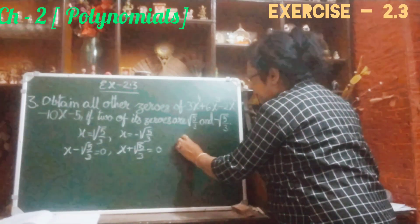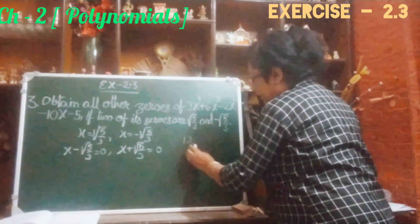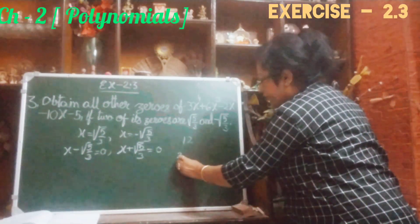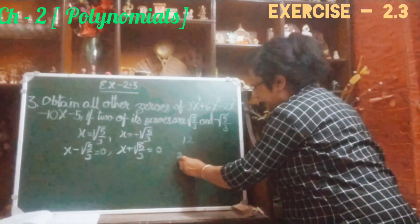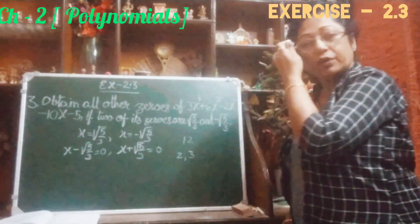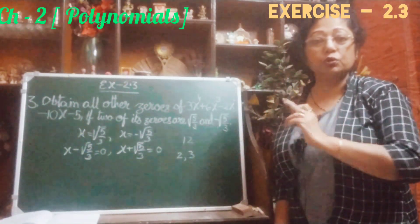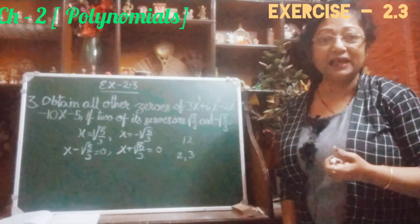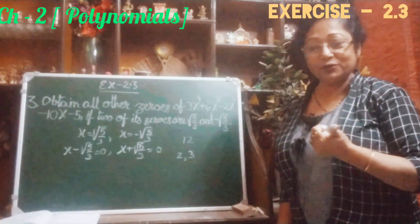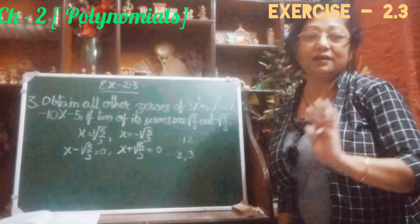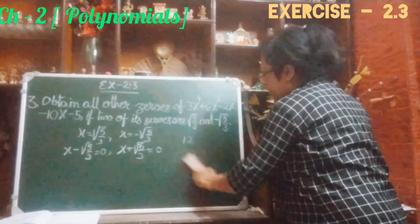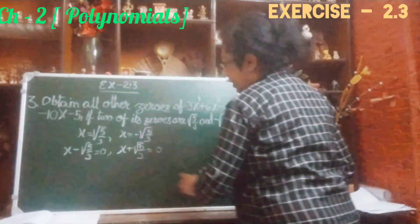Just like this — suppose 12 is there. 2 is a factor of 12 and 3 is also a factor of 12. If we multiply 2 and 3, what we will get — we will get 6, and you know 6 is also a factor of 12. Same thing here, same concept — you just apply this one.